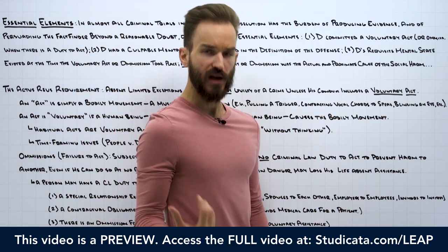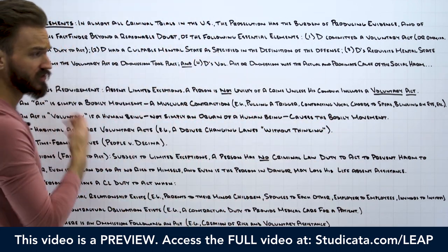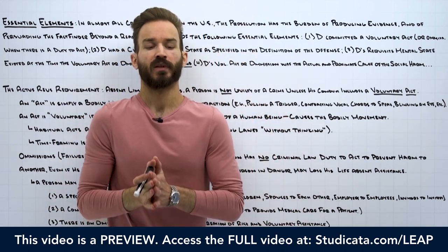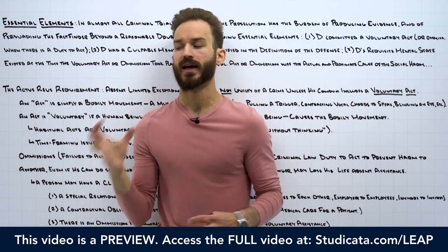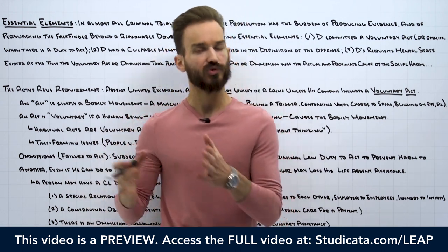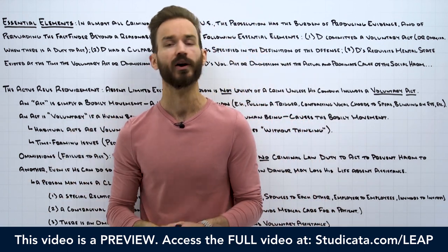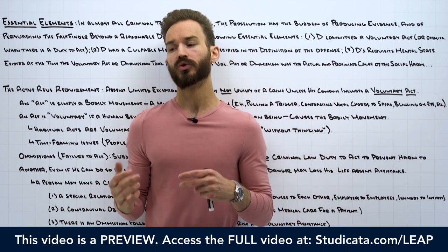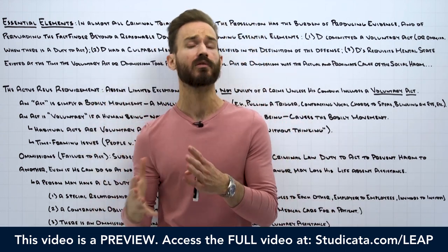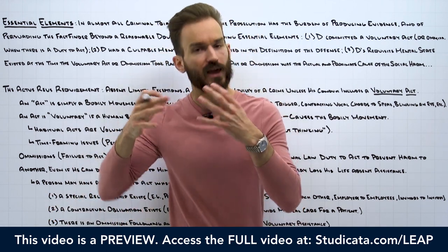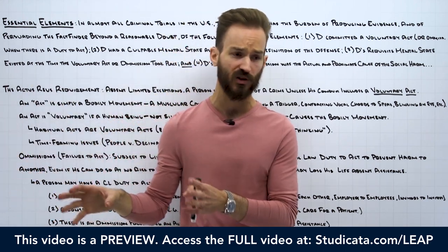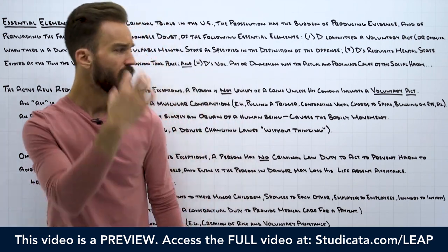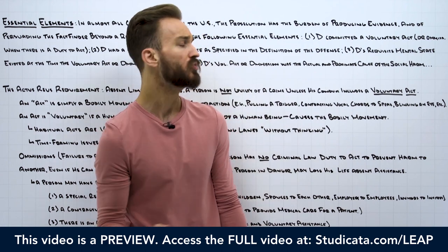Usually this analysis is pretty straightforward — we know what a physical act is. Usually the question is more so whether an act is voluntary or not voluntary. One really important point: in criminal law, we use the term voluntary and involuntary in lots of different ways, so context is really important. We're going to get to things like voluntary manslaughter and involuntary manslaughter — we're using the word voluntary differently in that context than in the actus reus context. Anytime I'm using that word, think about it in context.